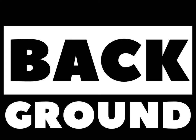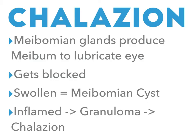In terms of background, chalazions are basically formed from meibomian glands. The function of meibomian glands is to produce something called meibum to lubricate the eye. If this gets blocked and swollen, that turns into something called a meibomian cyst. If that gets inflamed and gets granuloma formation in it, then that's a chalazion.